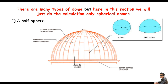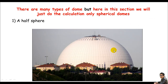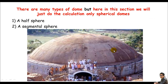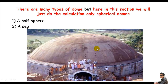A spherical dome may be a half sphere — if you cut the full sphere in two equal parts, one part is known as a half sphere. Look at the picture; the picture clearly shows the dome is just a half sphere. The dome may also be a segmental sphere — this is not a half sphere, it's just a part of a sphere, like cutting a little segment of a sphere.